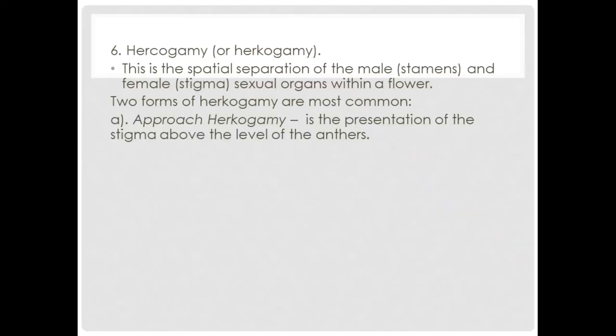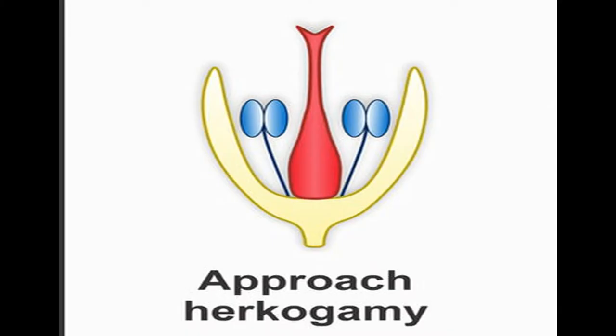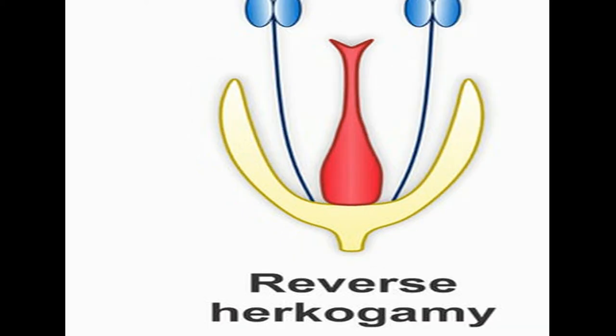Now let's take a look at herkogamy. This is the spatial separation of the male and female sexual organs within a flower. There are two types. Approach herkogamy is the presentation of the stigma above the level of the anthers; this arrangement causes floral visitors to contact the anthers before the stigma. Reverse herkogamy is displayed when the stigma is recessed below the level of the anthers, also causing floral visitors to first contact the anthers. For this reason, reverse herkogamy is believed to facilitate greater pollen export than approach herkogamy.